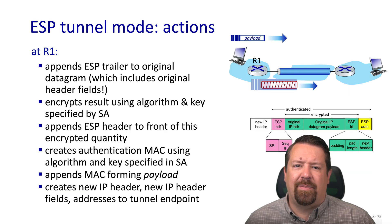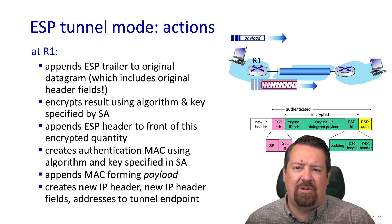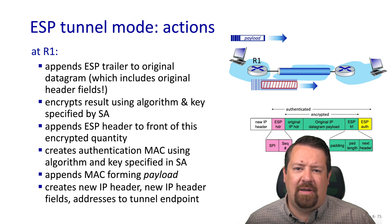Looking at the operations to be performed at R1: first it must append the ESP trailer — including padding and related fields — to the original data, and then that will be encrypted along with the original data and IP header. It then prepends the ESP header in front of this encrypted block, then creates the necessary authentication digest over all of this information and appends that, forming the complete payload for the new IP packet. The new IP header does not take any information from the existing IP header — the addresses in the new IP header are those belonging to the tunnel endpoints.